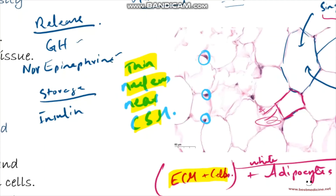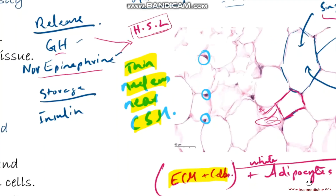The release of triglycerides is triggered through activation of hormone-sensitive lipase inside the adipocytes. This enzyme is activated by growth hormone and norepinephrine, and it breaks down the stored triglycerides into fatty acids and glycerol, which are then transported into the blood.